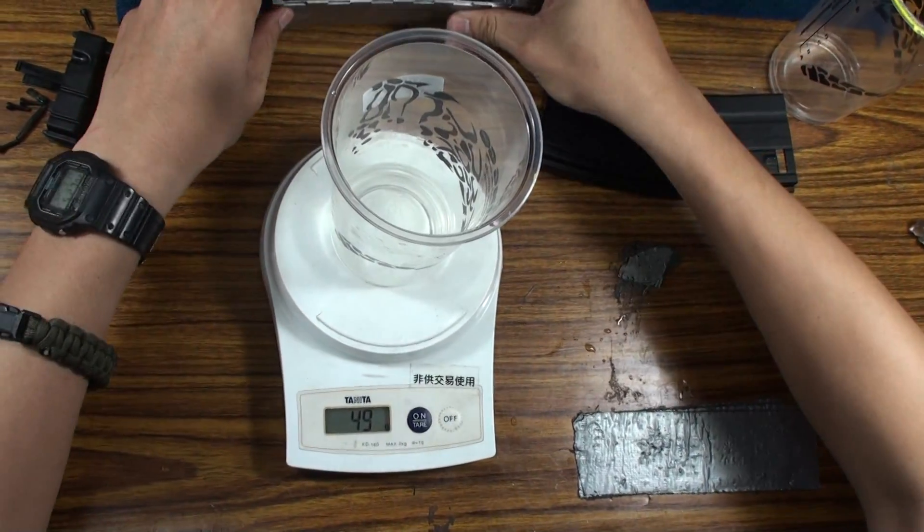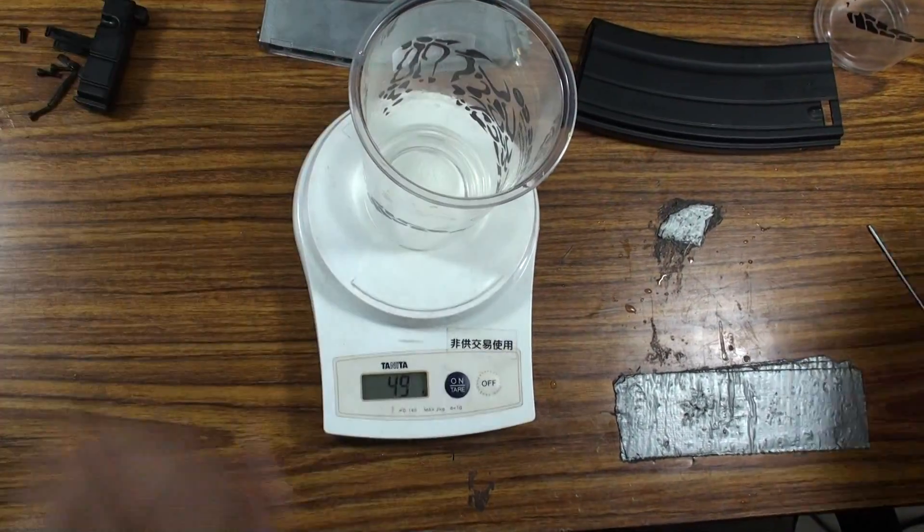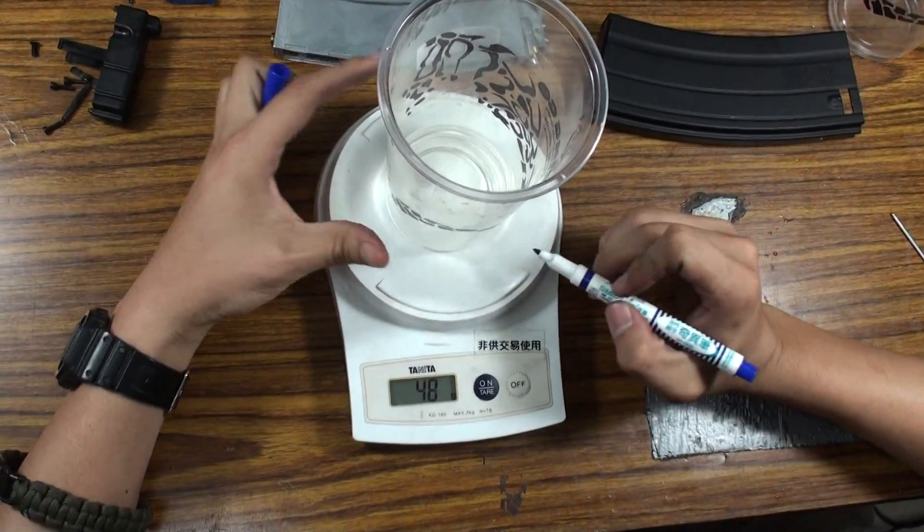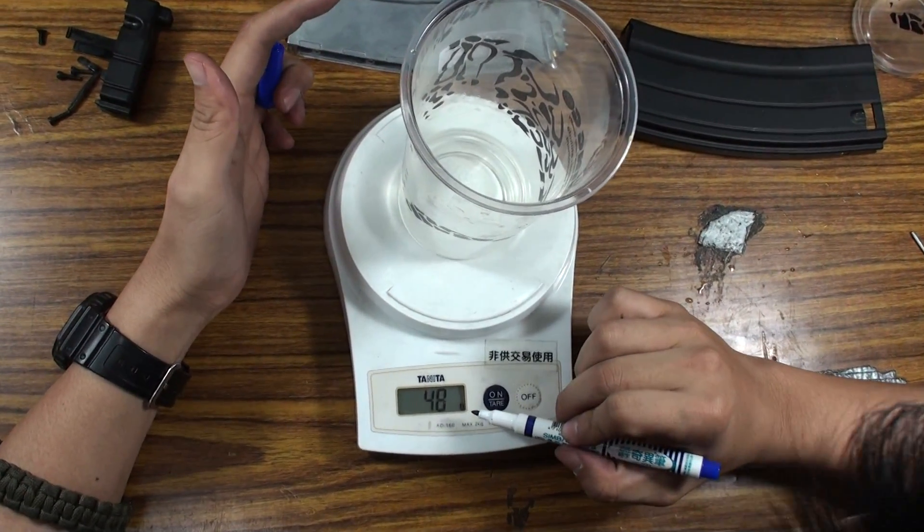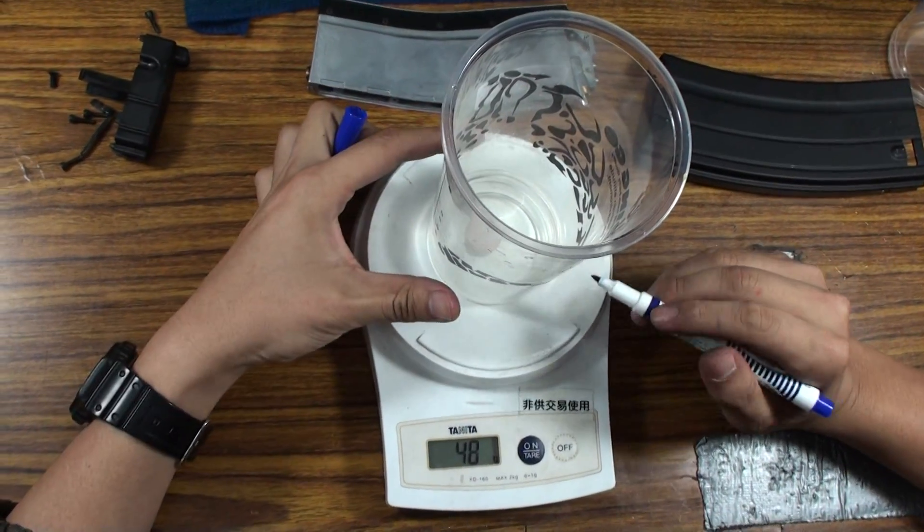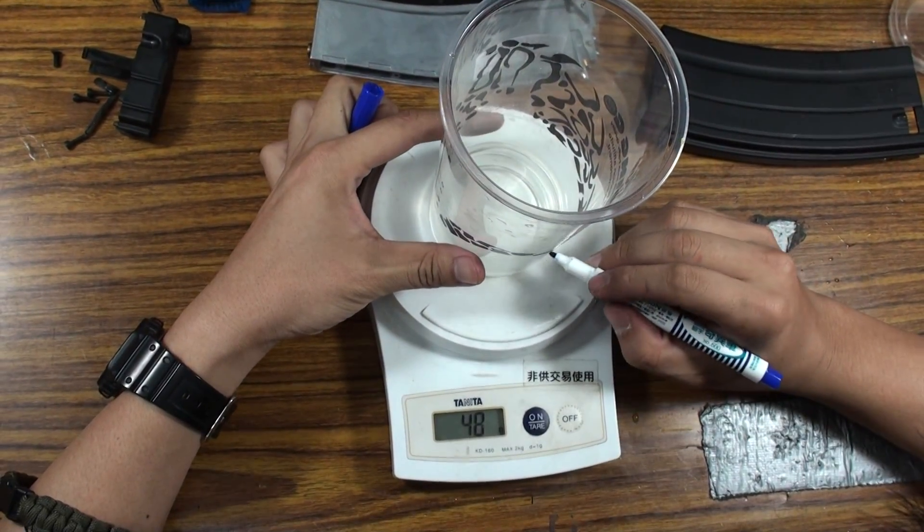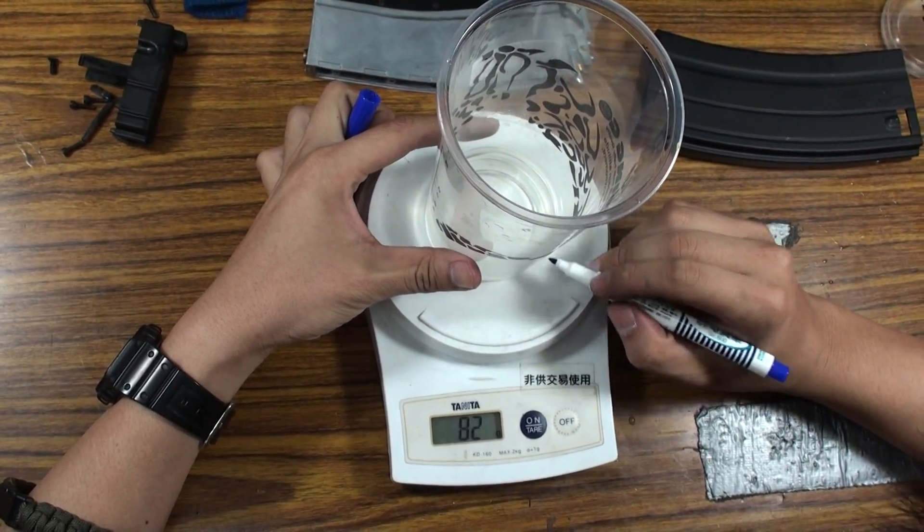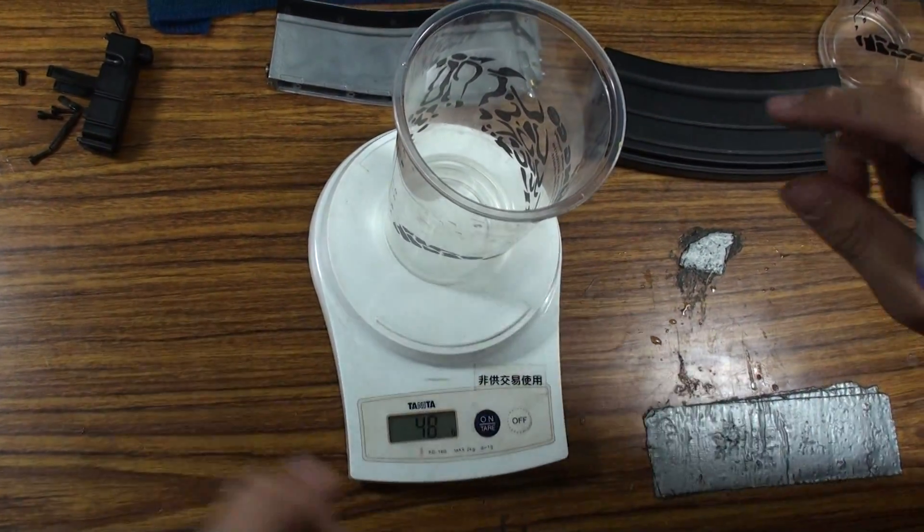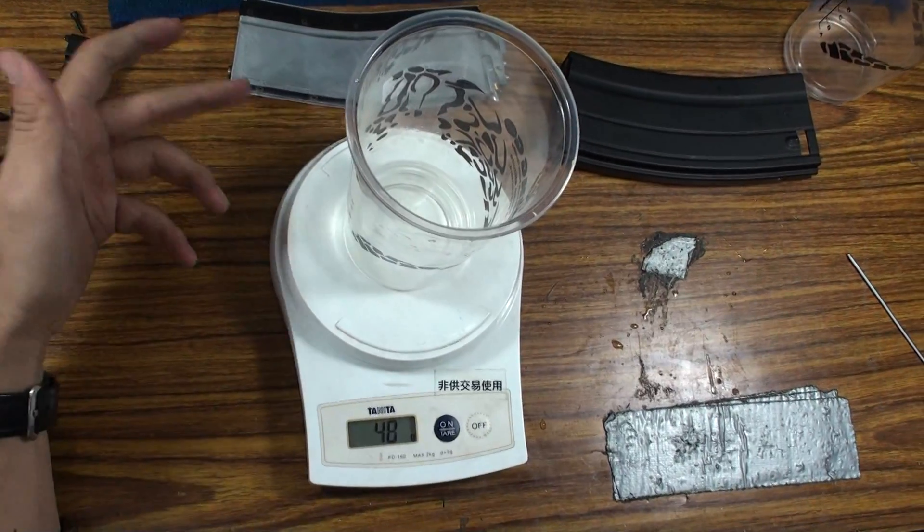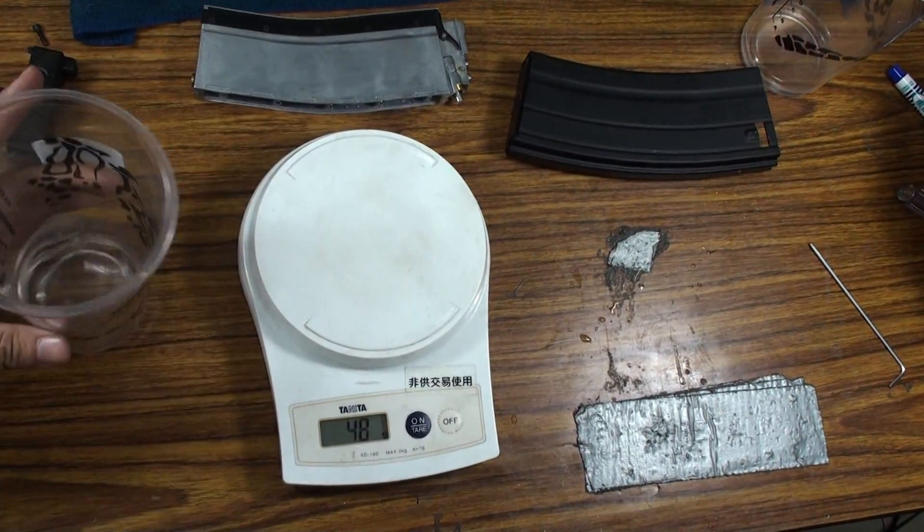Now I put all the water into this cup and draw the line to show you—this is the old version magazine and the weight is about 48 grams. That means the water also represents the internal space. Old version done.